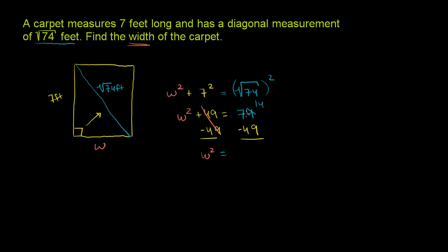We can make this a 14. This becomes a 6. 14 minus 9 is 5. 6 minus 4 is 2. And we have W squared is equal to 25.